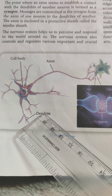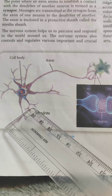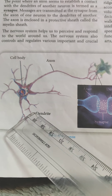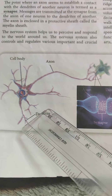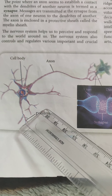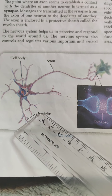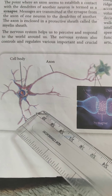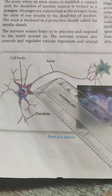Dendrites are short cellular extensions that receive impulses from other neurons and transmit them to the axon.